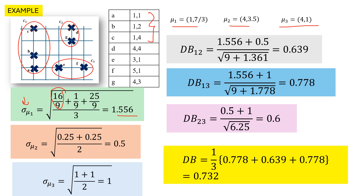Sigma_mu_2 is for cluster 2, which has only two points. The mean is (4, 3.5), and the variation is 0.5 squared plus 0.5 squared, giving overall 0.5. Similarly, we compute sigma_mu_3. The Davis-Bouldin index for the cluster pair (1, 2) takes sigma_mu_1 plus sigma_mu_2 divided by the distance between means — 3 squared for the first coordinate and a value for the second — giving db_12 = 0.639. Similarly, we compute db_13 and db_23.